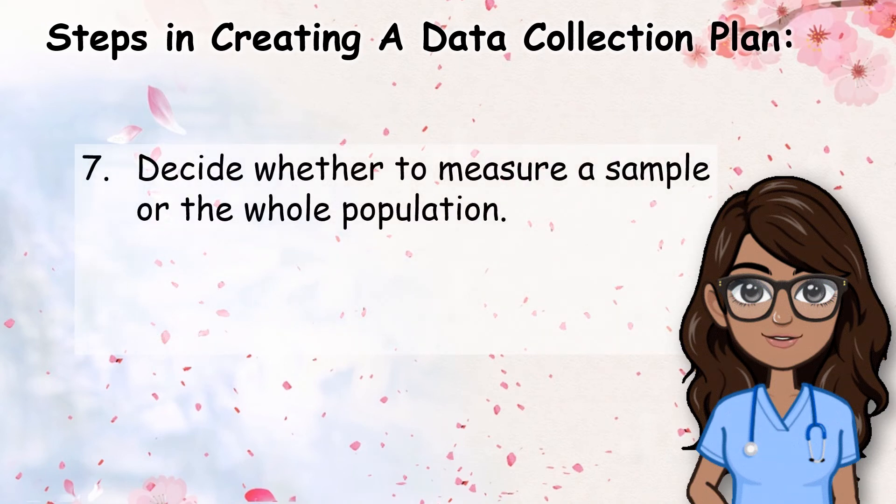Step seven is to decide whether to measure a sample or the whole population. As we have learned from previous lessons, oftentimes it is impractical to measure an entire population of data. In such a case, we then take a sample of data using different sampling techniques. But in rare situations, you may choose to measure the entire population if reasonable.